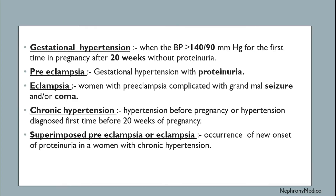Gestational hypertension: blood pressure more than or equal to 140/90 mmHg for the first time in pregnancy after 20 weeks, without proteinuria. Preeclampsia: gestational hypertension with proteinuria. Eclampsia: women with preeclampsia complicated with grand mal seizure and/or coma. Chronic hypertension: hypertension before pregnancy or diagnosed before 20 weeks. Superimposed preeclampsia or eclampsia: new onset of proteinuria in a woman with chronic hypertension.